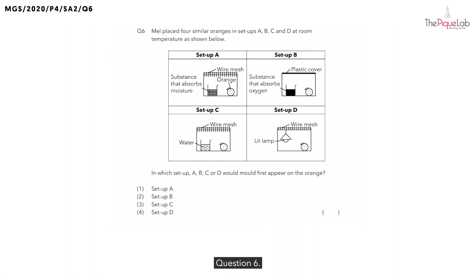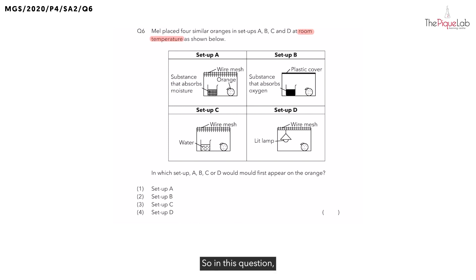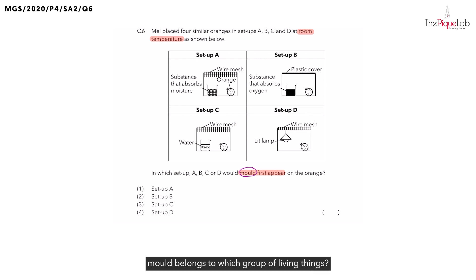Question six: Malcolm places four similar oranges in setups A, B, C and D at room temperature as shown below. In this question, they want us to find out in which setup would the mold first appear on the orange.